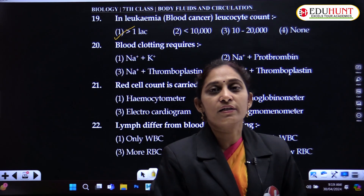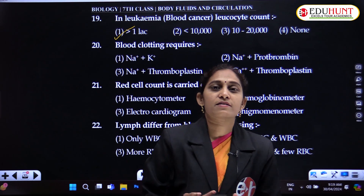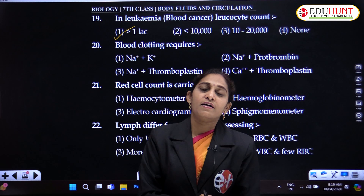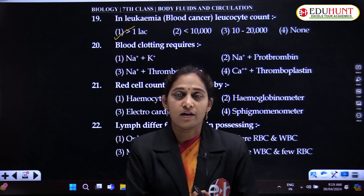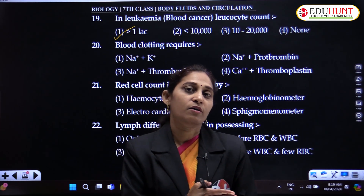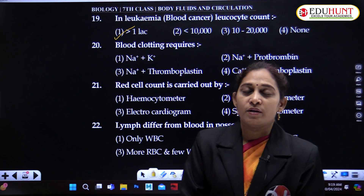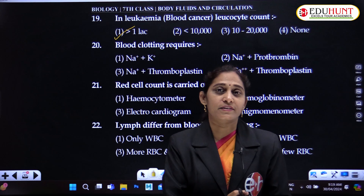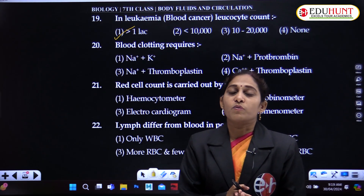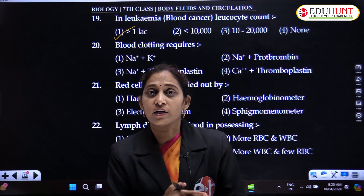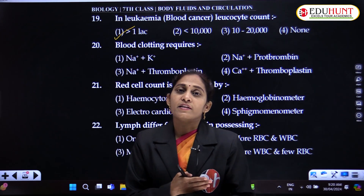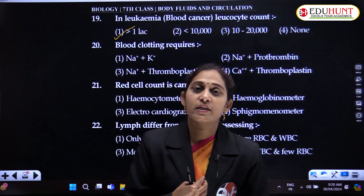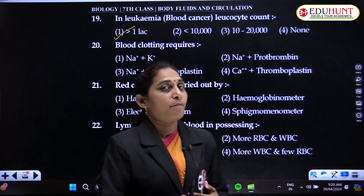Generally, WBC numbers increase during infections — that is quite common and is a normal increase. If we have an infection and test our blood, our leukocyte count will be more than in normal conditions, because leukocytes have to release antibodies; they get activated, divide more and more, and produce more antibodies. So their number increases during infections and diseases.